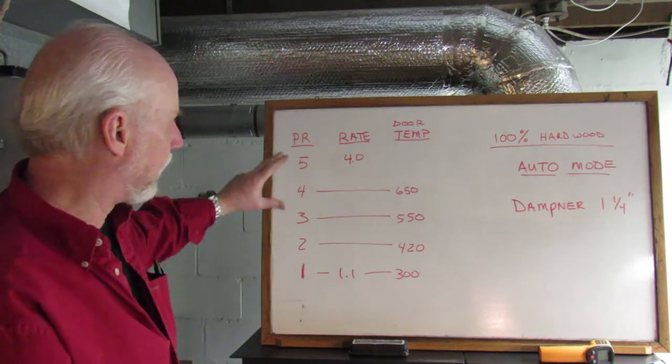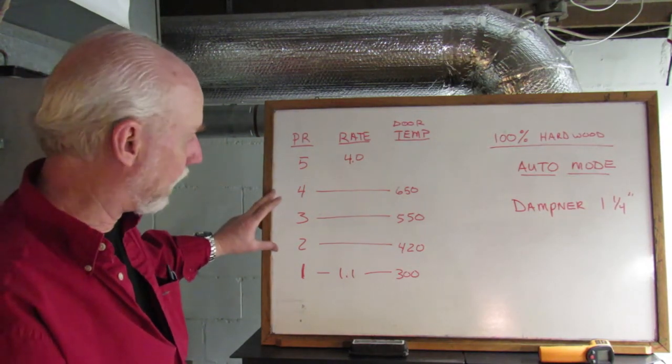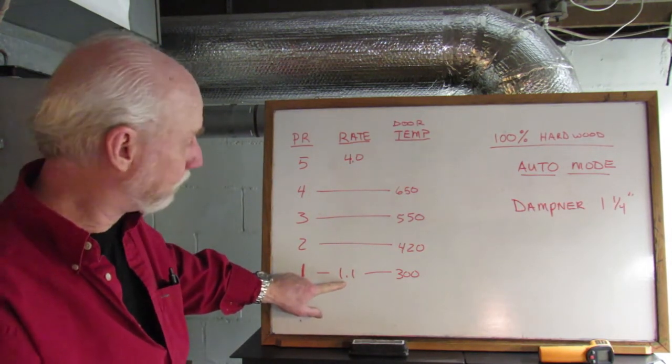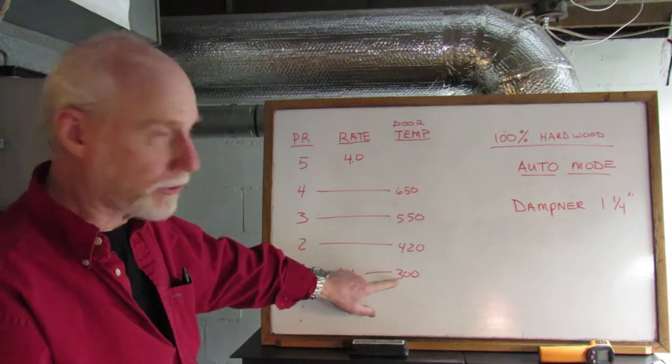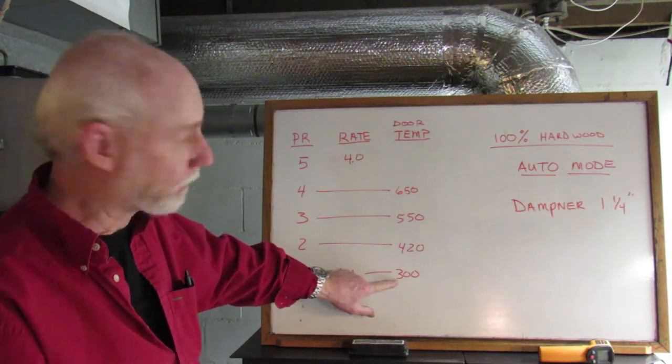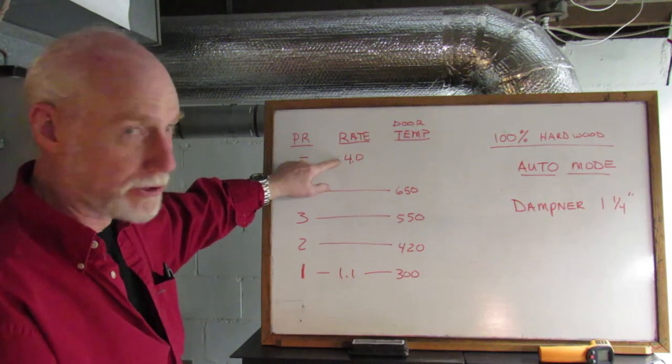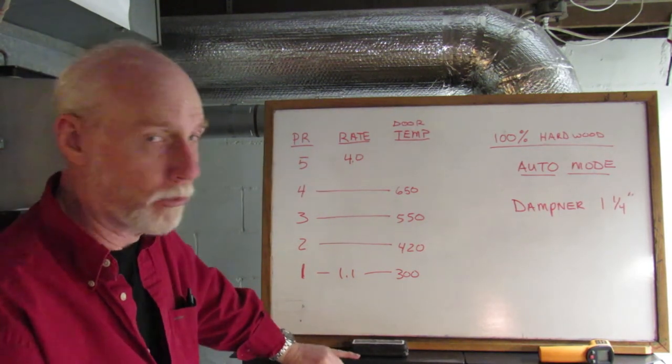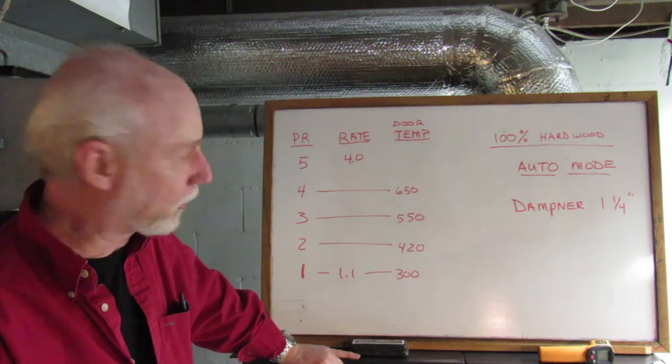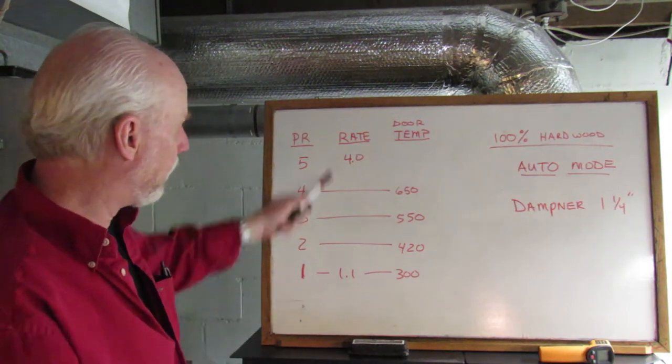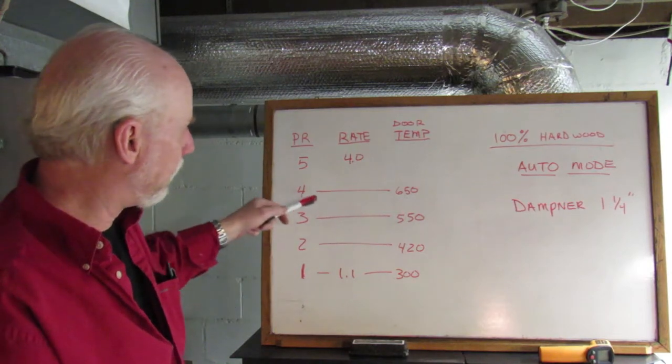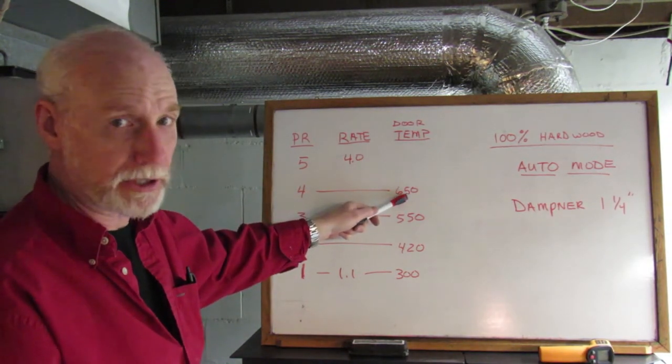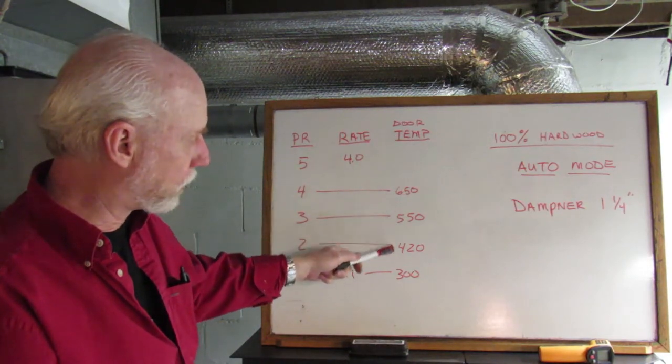I'm going to show you how to set this up. These are the settings when I'm running right now on mine. I've got the PR1 set up at 1.1, I'm getting a door temp of 300 degrees. I've got PR5, which is your top setting, set up at 4.0 pounds per hour. Now under these two settings, it'll give me a door temp on setting number 4 of 650, and then it just interpolates down.